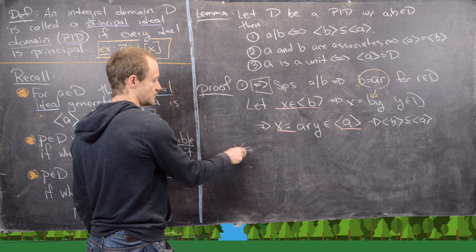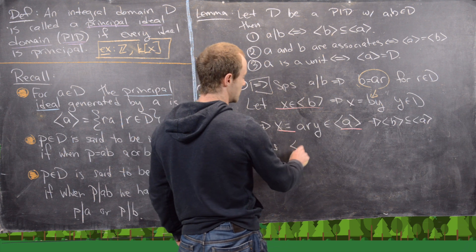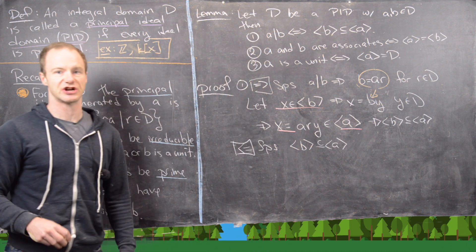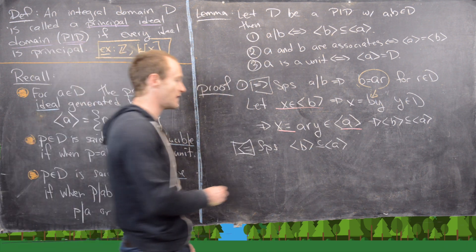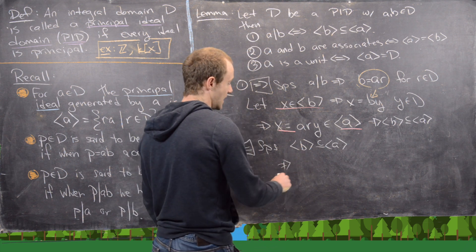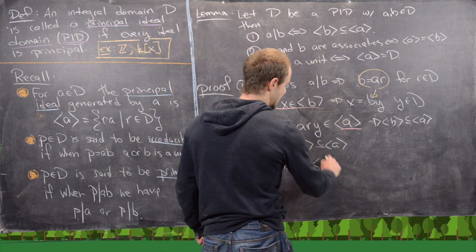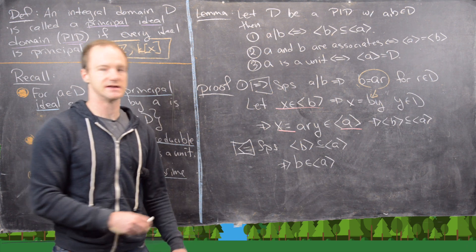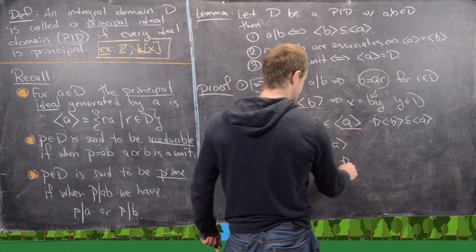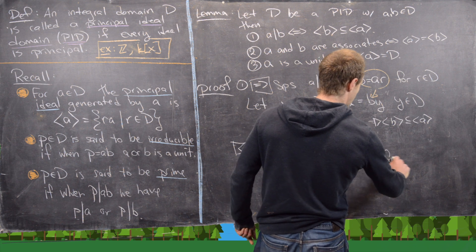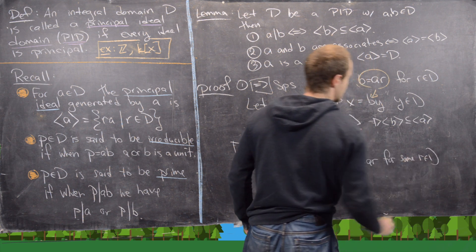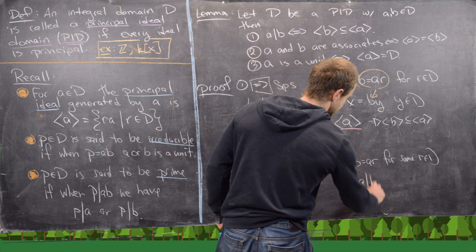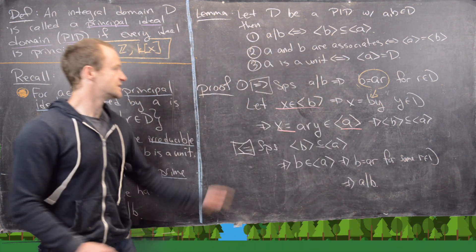For the reverse direction, suppose ⟨B⟩ is a sub-ideal of ⟨A⟩. Then in particular the element B itself is in ⟨A⟩, since everything in ⟨B⟩ is in ⟨A⟩. That means B equals AR for some R in D, which is exactly what it takes to say A divides B. So we've proven part one.